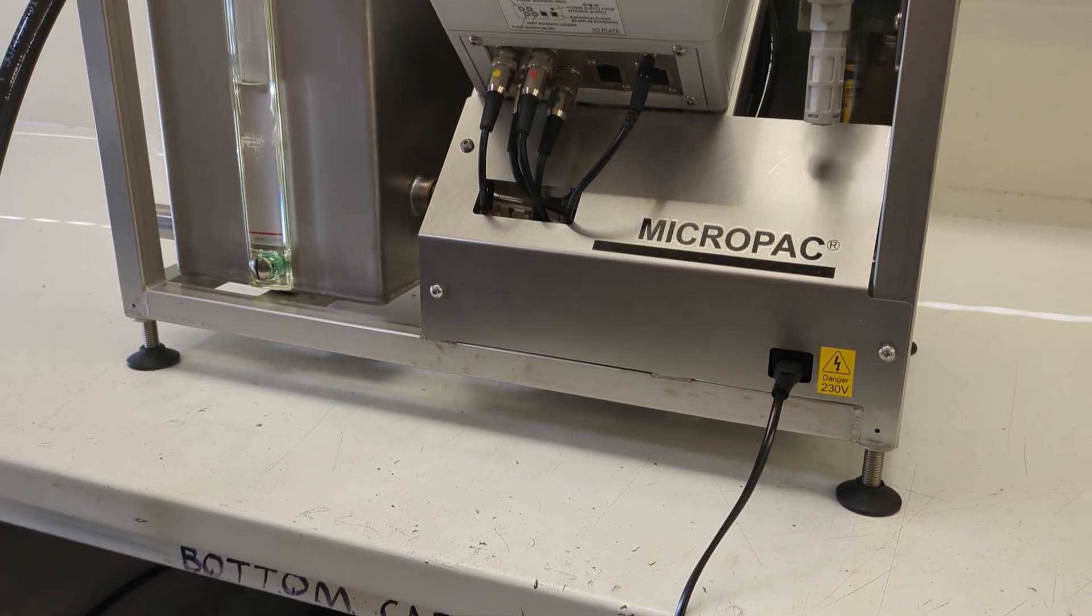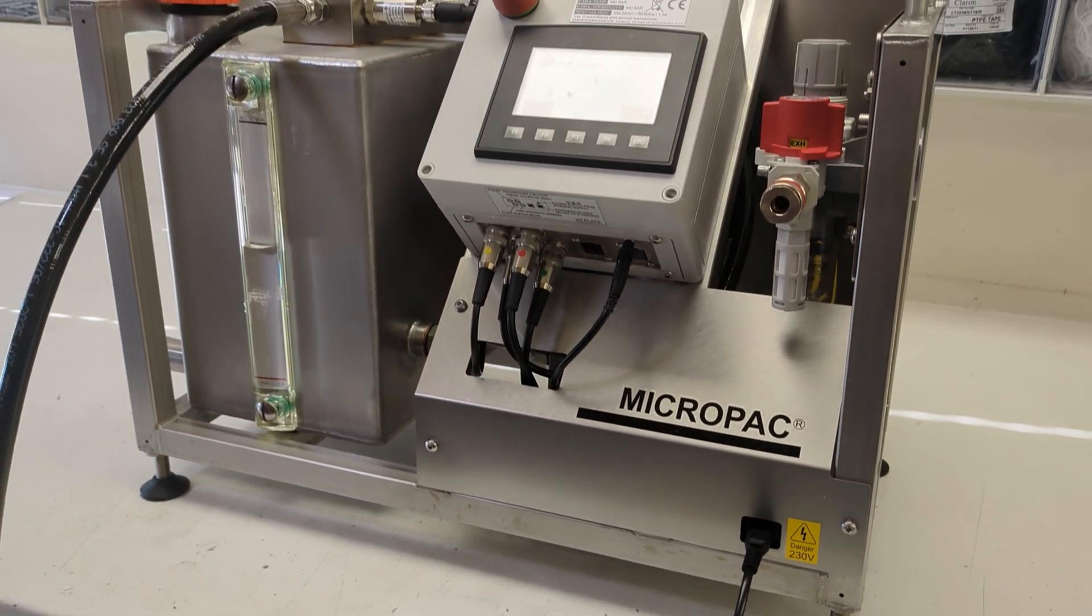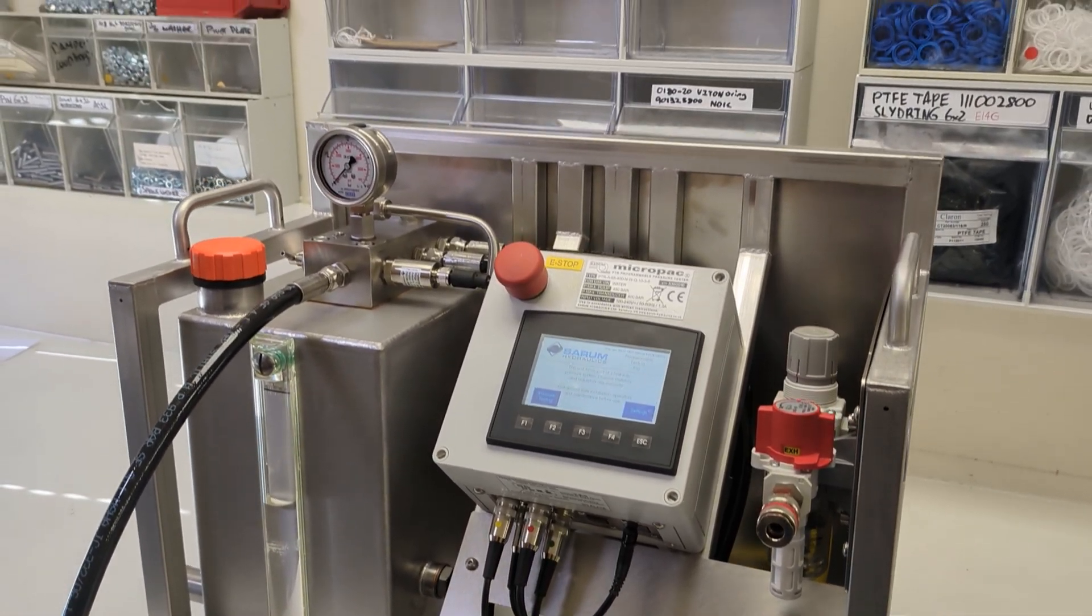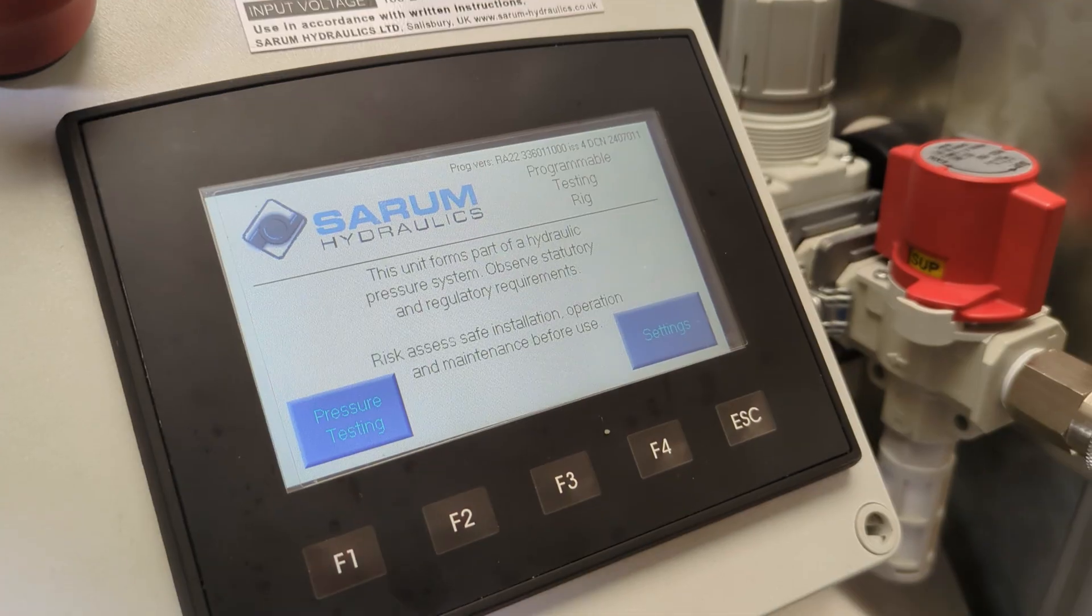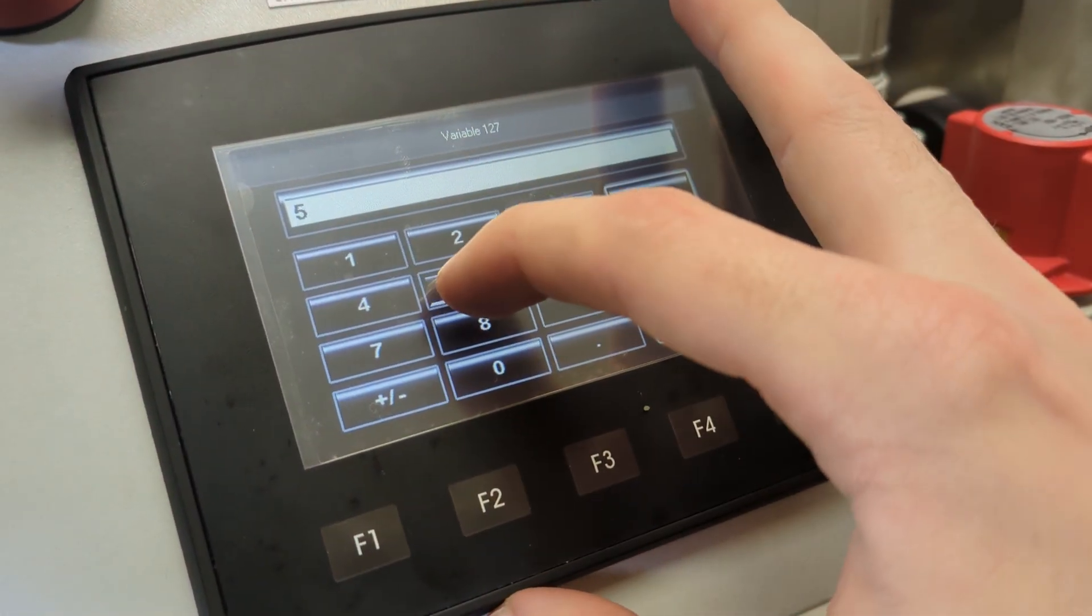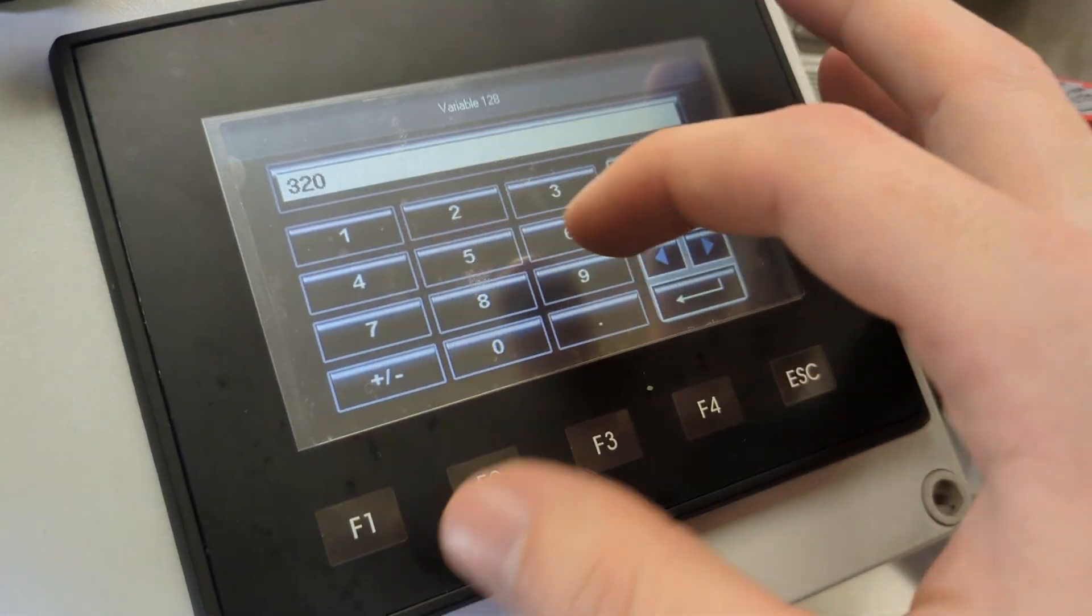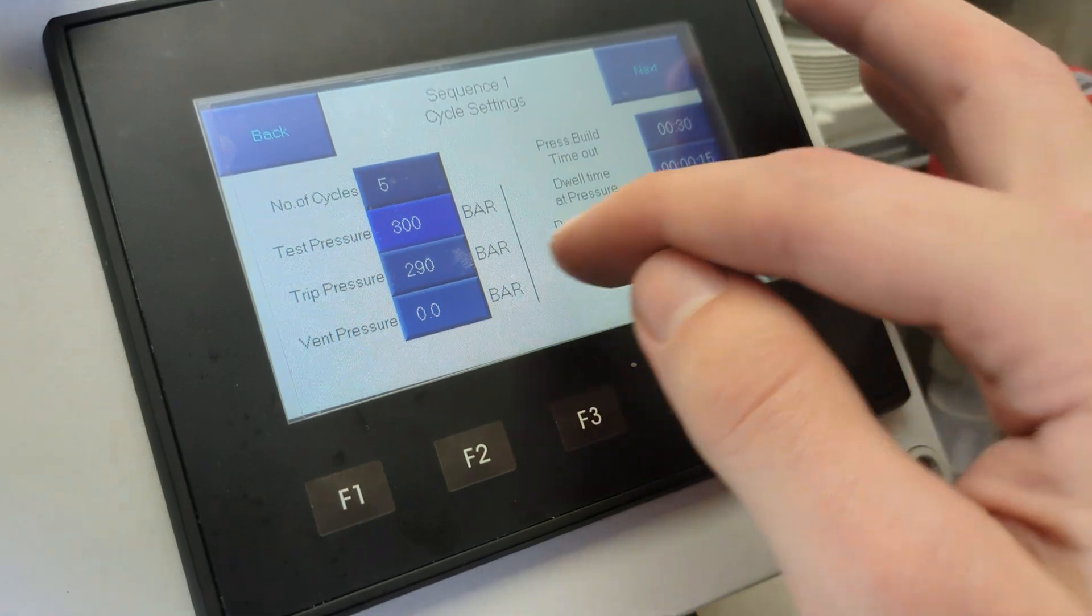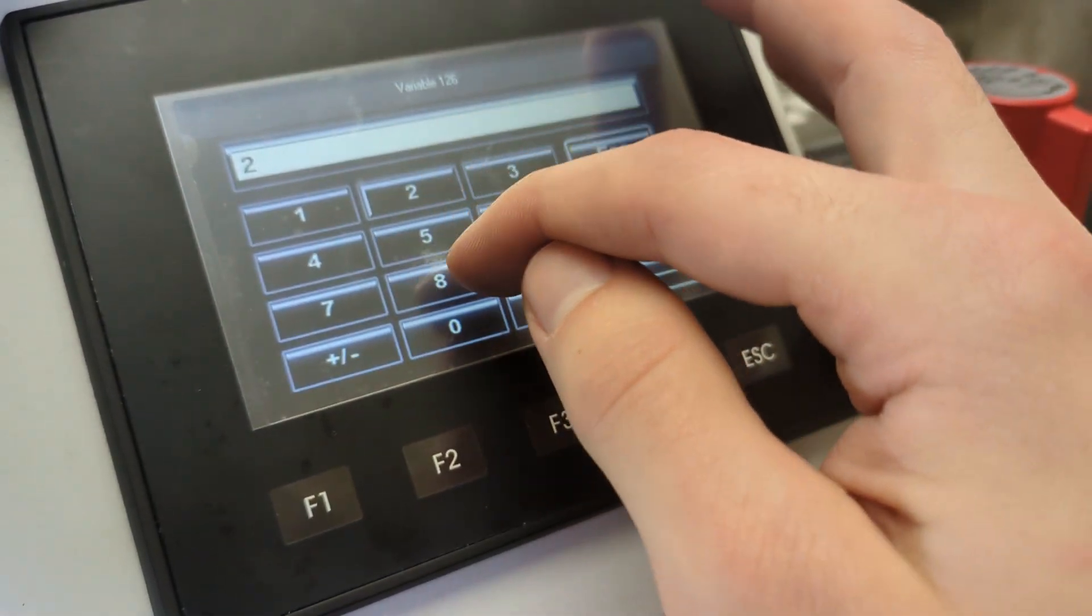Secondly, we have a more complex PTR-A unit which is the same as the PTR-M except it comes with a PLC control box allowing you to program automated cyclical pressure tests for products that go through many pressure cycles in their life like radiators, fuel tanks or composite vessels. We also have a video overview of this product which you can find here. We would suggest this product for longer automated cyclical pressure testing.